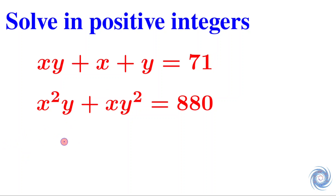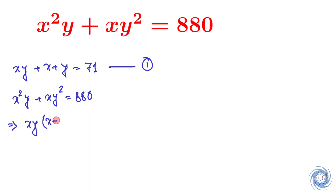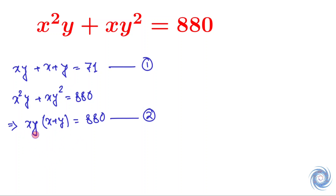Let us rewrite the given equations. Let us take the first equation as equation 1. Now let us assume that x + y = t and xy = s.